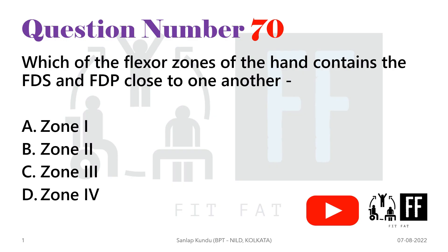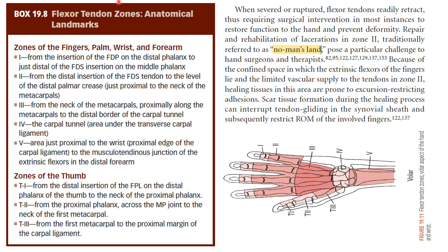There are five flexor tendon zones in the fingers, palm, wrist, and forearm. For fingers 2 to 5, the zones are similar, but for the thumb, the first, second, and third zones are different. Here you can see in zone 2 there is presence of both FDS and FDP.